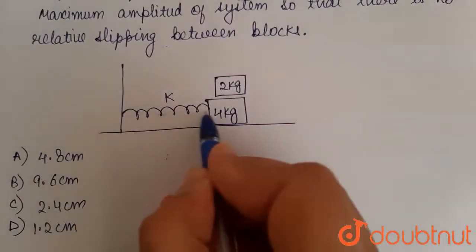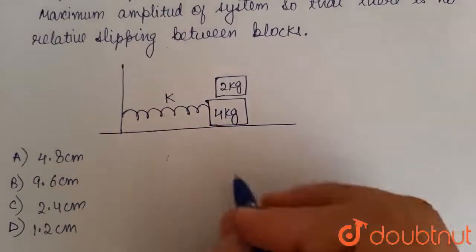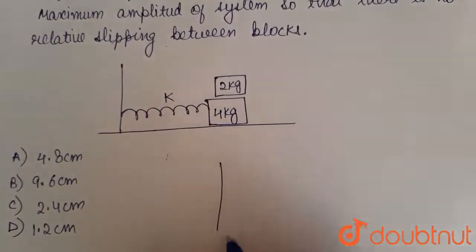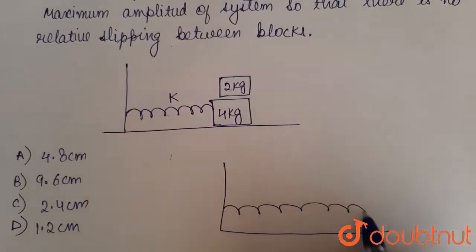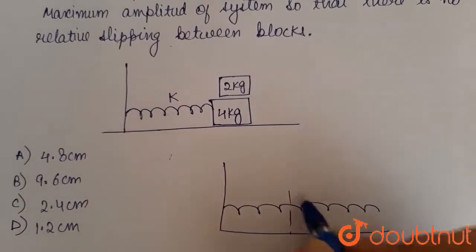initially the spring is at its natural length. I will consider another system in which the spring is elongated by a distance A, where A represents the maximum amplitude of the system.